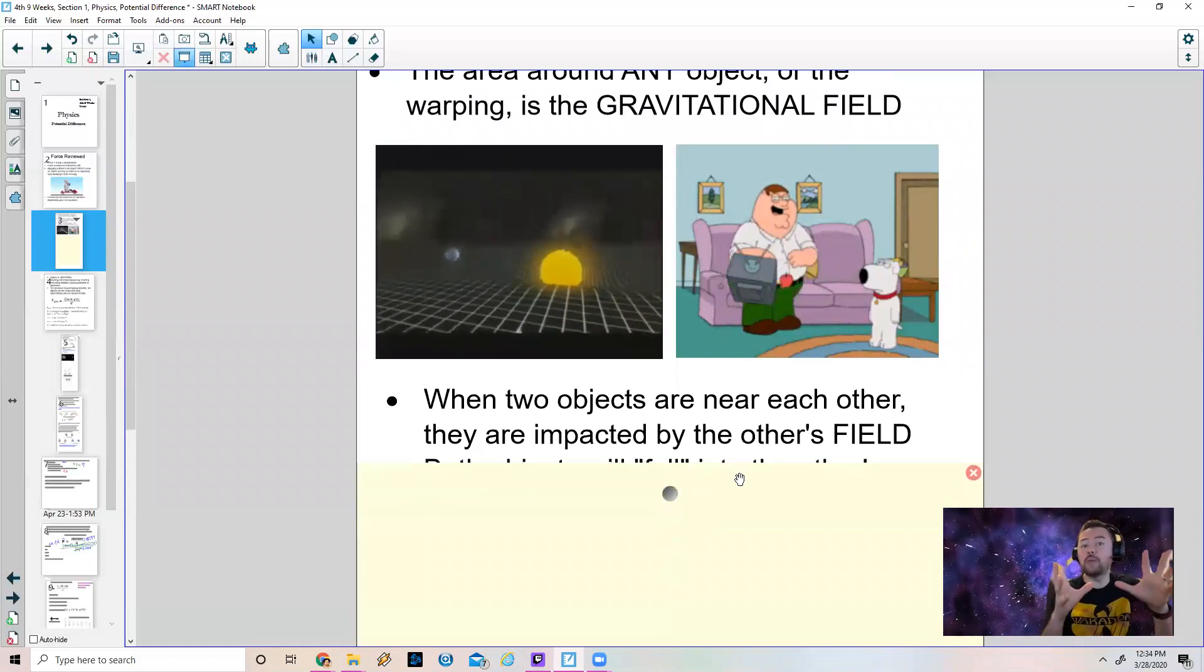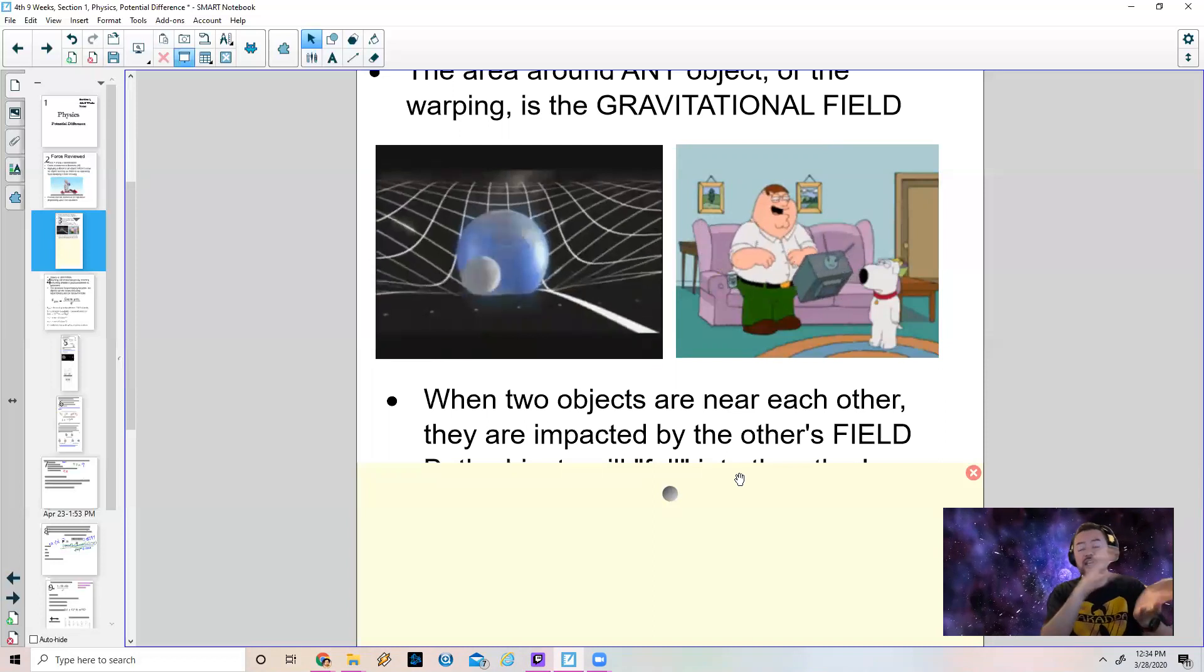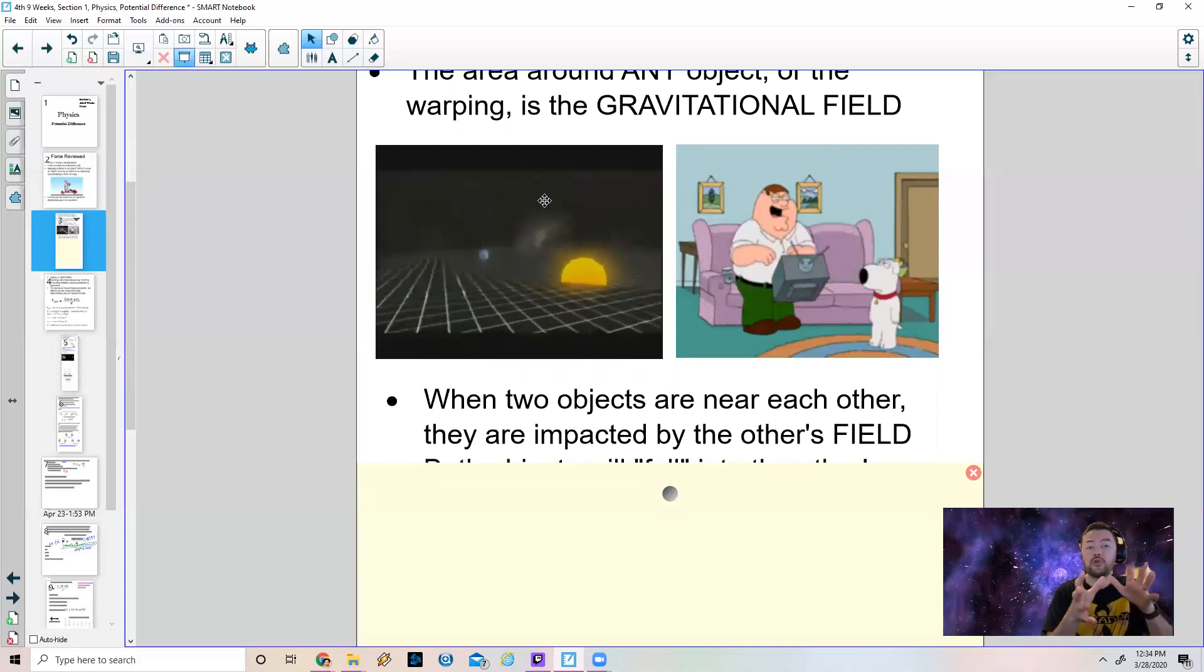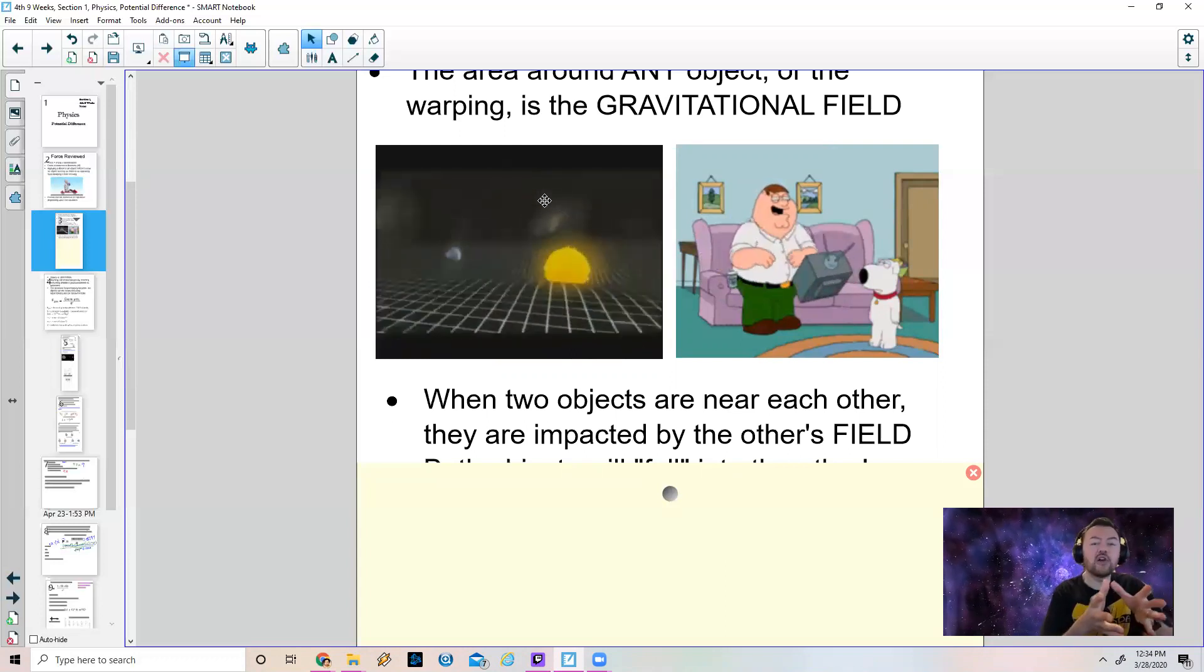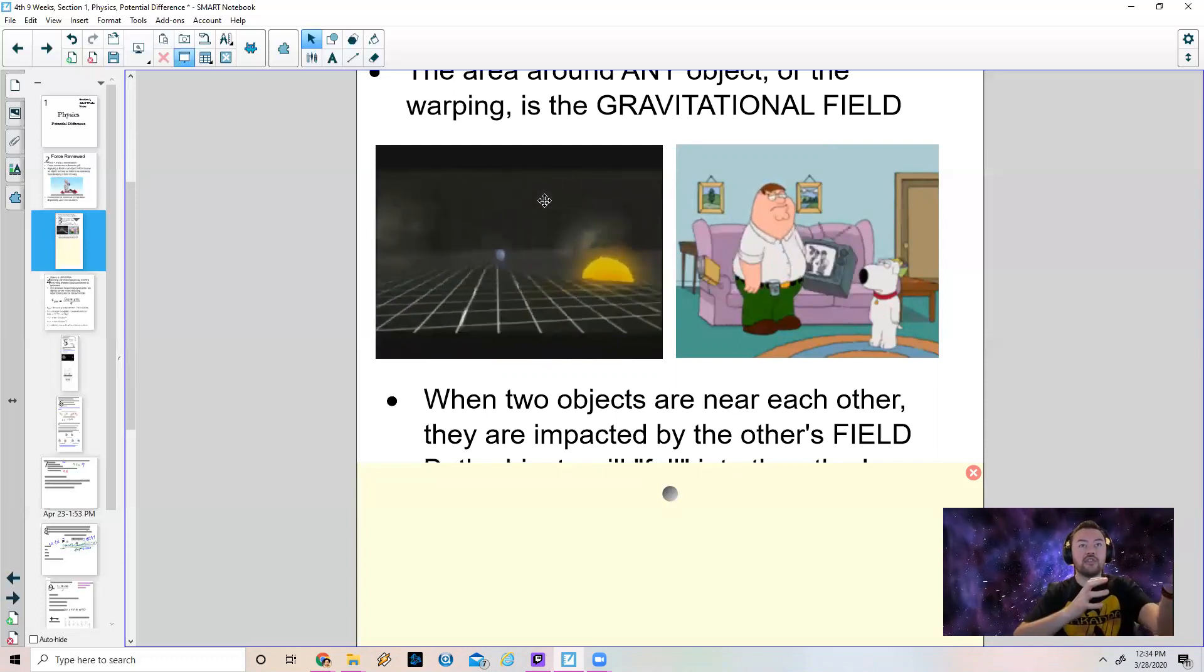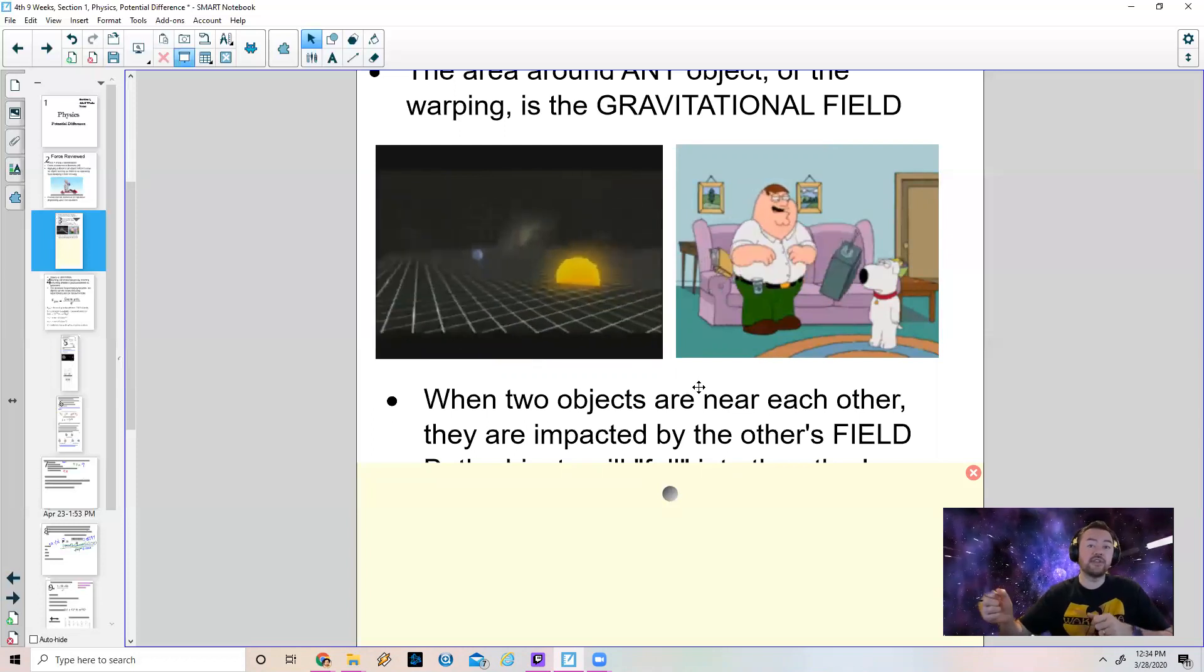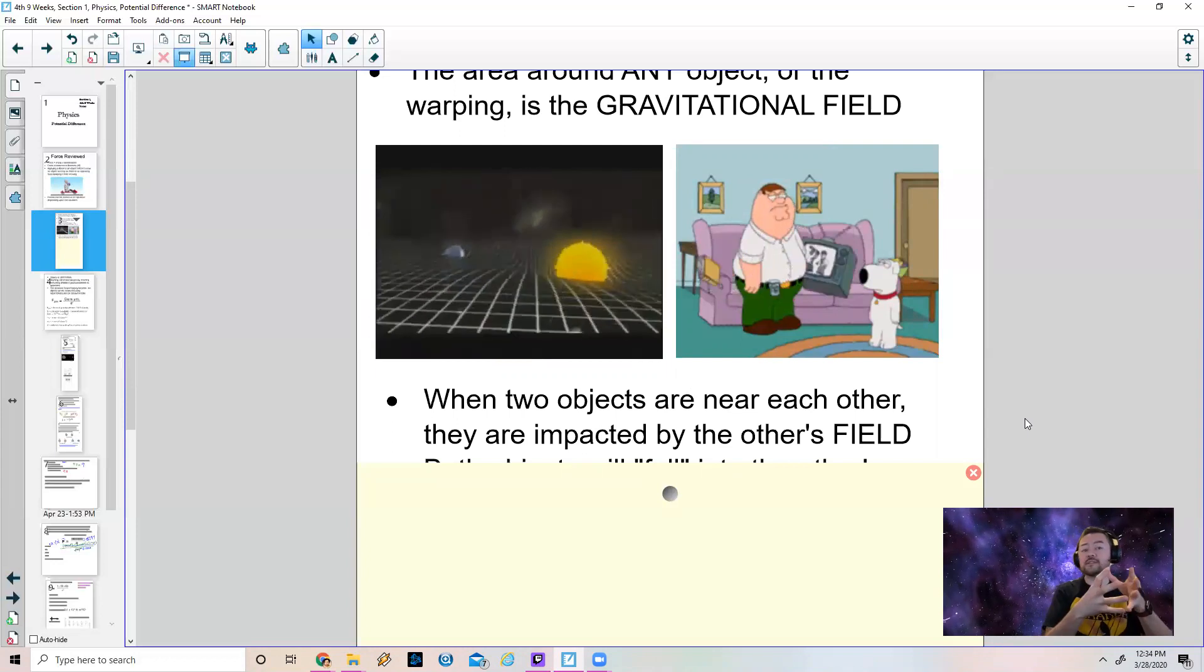But when you take two objects that are really close to each other, they are impacted by the other's field, the other's gravitational field. So when you look at the Earth and the Moon, they are affecting each other because they are massive objects and they're relatively close to each other, so therefore their fields affect the others. But we are also around the Sun, so we are affected by the Sun's gravitational field, but the Sun is also affected by our gravitational field.